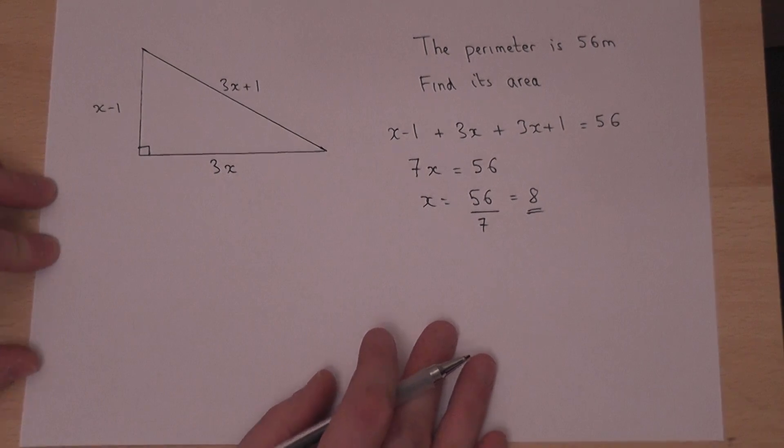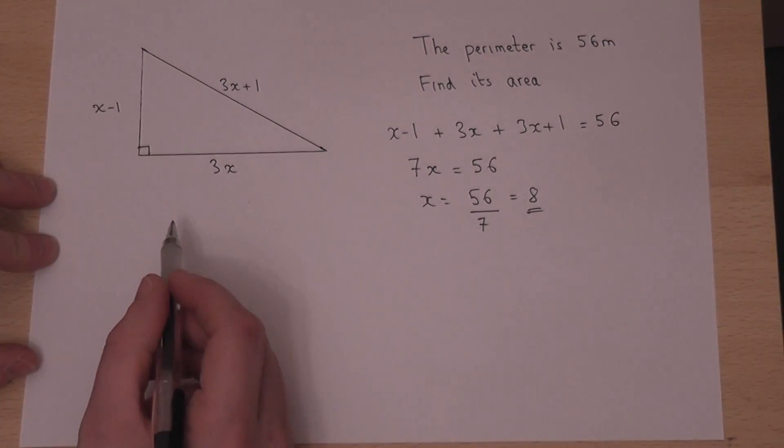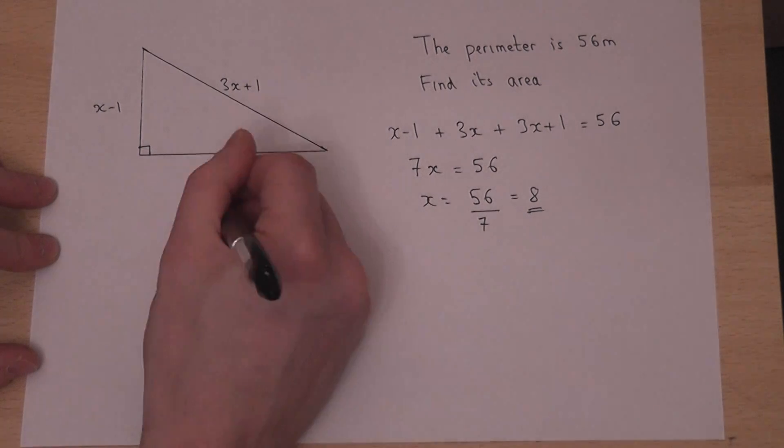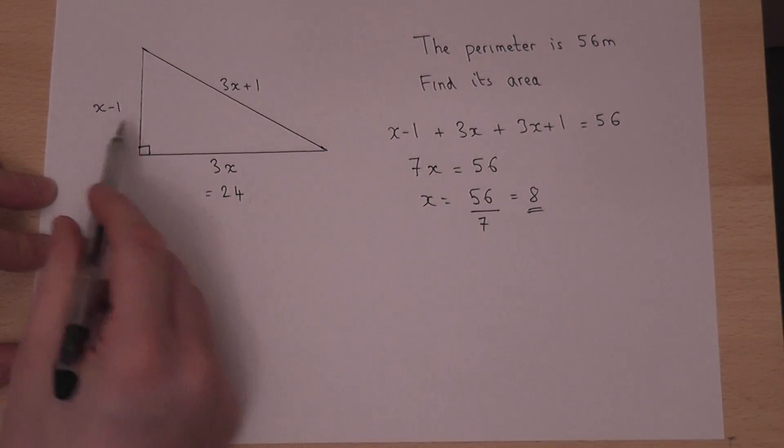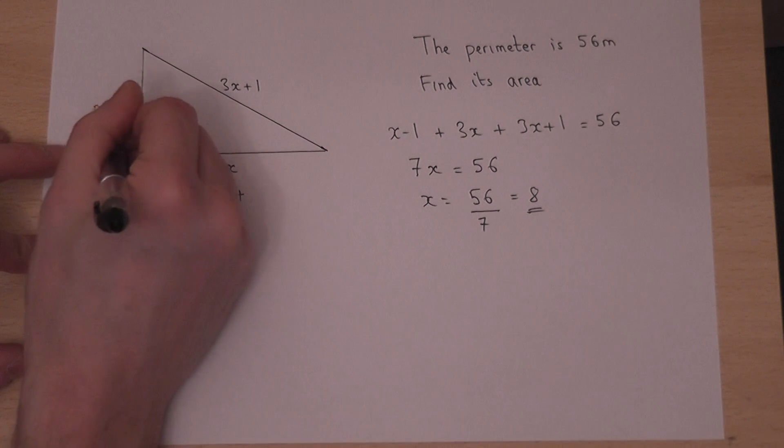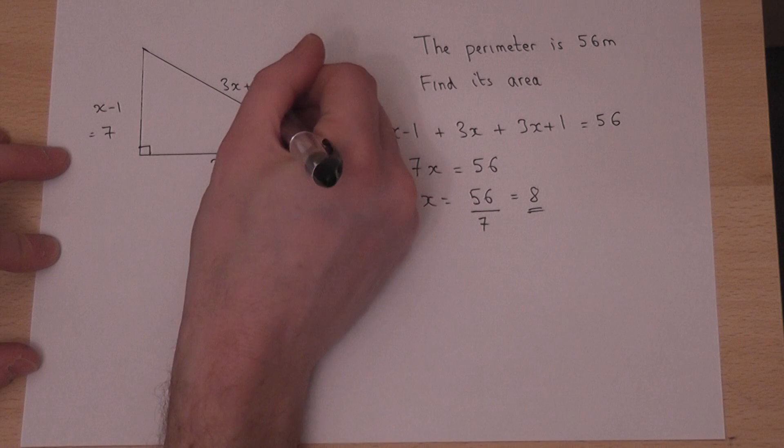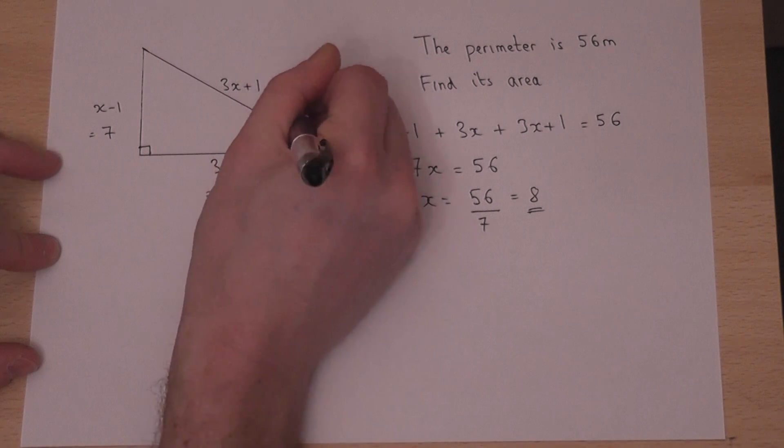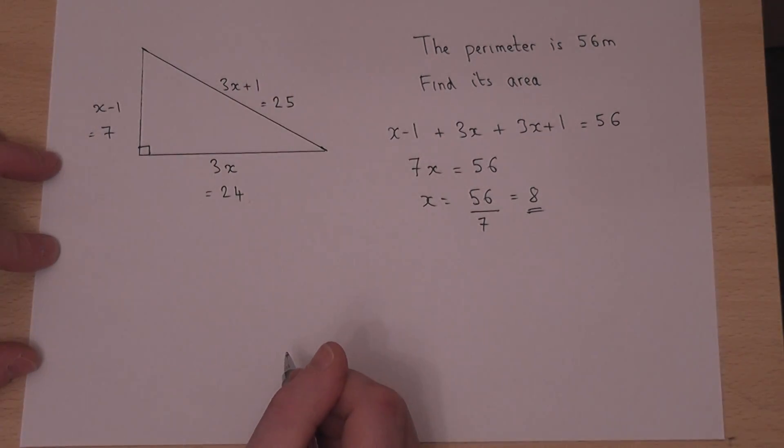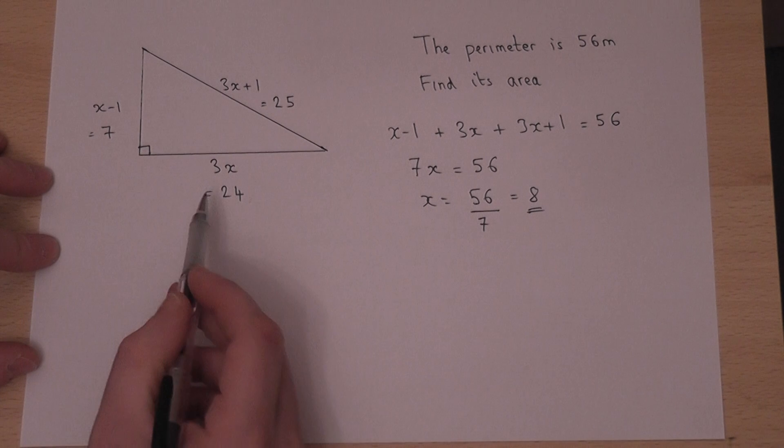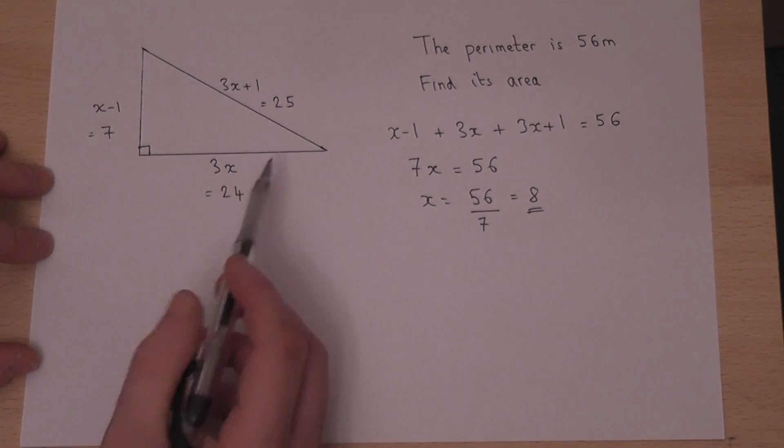We can therefore find out the length of the sides. 3 times x must equal 24. x take 1 must equal 7. And also 3x plus 1 will equal 25. So these are the dimensions of the triangle.